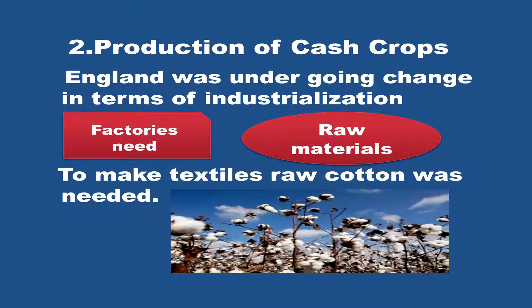Secondly, the production of cash crops. The second important effect of British rule in India was the production of cash crops. England was undergoing change in terms of industrialization. The factories in Britain needed raw materials, and to make textiles, raw cotton was required. For this, they promoted the growth of cash crops in India. The production of cash crops was another important feature of Indian economy at the time of independence.